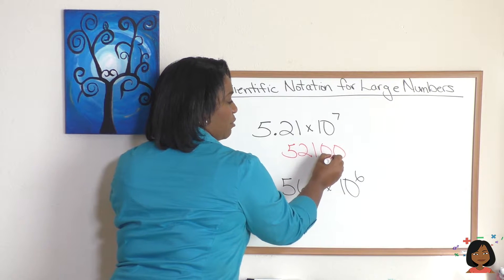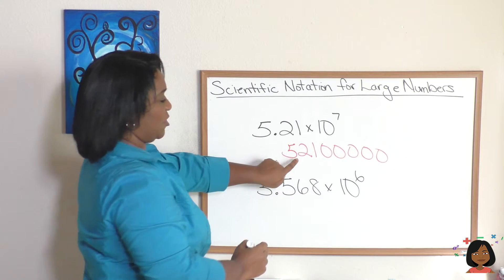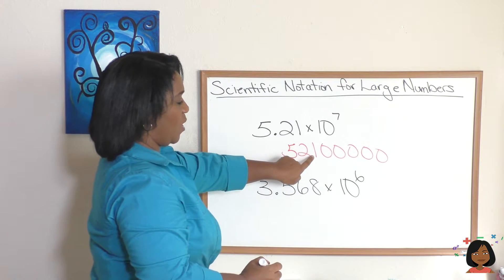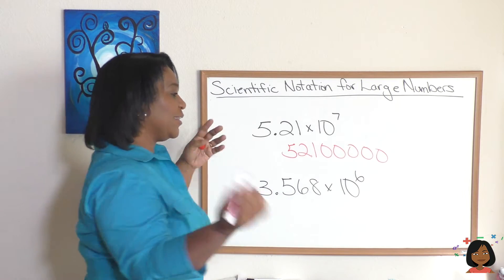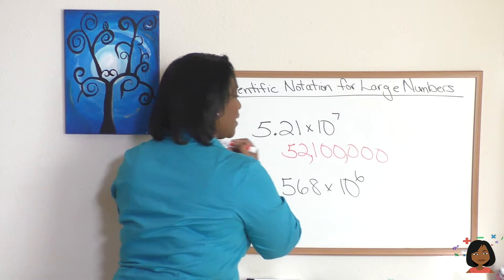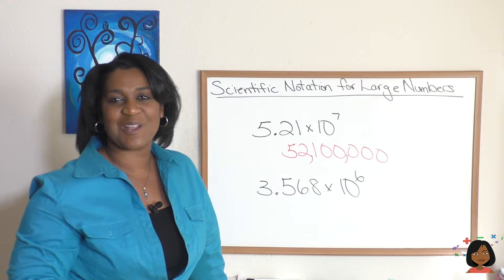And we're going to move it seven spots. 1, 2, 3, 4, 5, 6, 7. Let's make sure. It's here. 1, 2, 3, 4, 5, 6, 7. That's where our decimal would end up. Let's throw some commas in. 52,100,000 is our number.